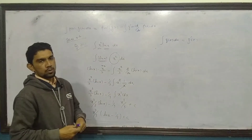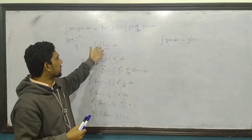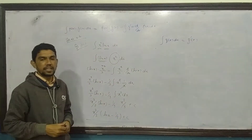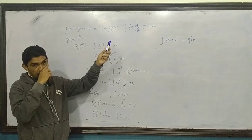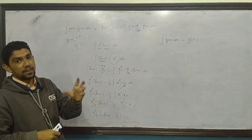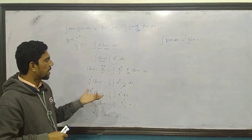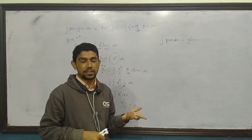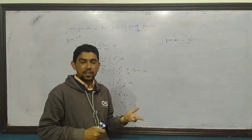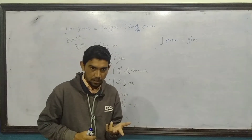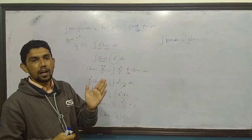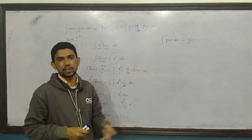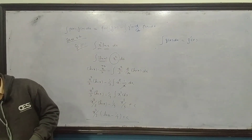Toh waise hi jaise pehle x squared over 2 aa raha tha, yahan x cubed over 3 aa raha hai. In questions mein koi mushkil nahi - sab ek jaise hain, formula aapke saamne hai. Aapne sirf first function aur second function ki pehchaan karni hai. Jo bhi trigonometric inverse function hai ya log function hai woh first function hai. Dono ek saath nahi aa sakte - in dono mein se koi ek bhi mojood hai toh woh first function hoga. Otherwise power rule wale function ko first function rakhein.